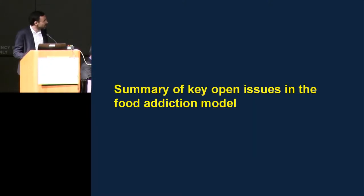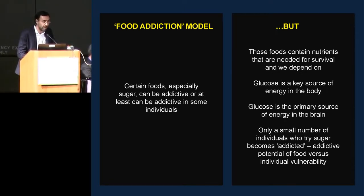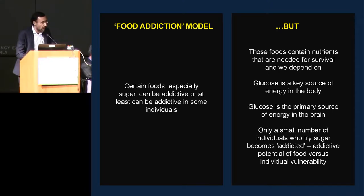This is a summary of open issues we've been discussing. According to the food addiction model, certain foods, especially sugar, can be addictive — or at least addictive in some individuals. But we need to acknowledge that those foods contain nutrients needed for survival. Glucose is a key energy source in the body and the primary source in the brain. It may be only a small number of individuals who try sugar and become addicted, which raises the question of how much is the addictive capacity of certain foods versus individual vulnerabilities.